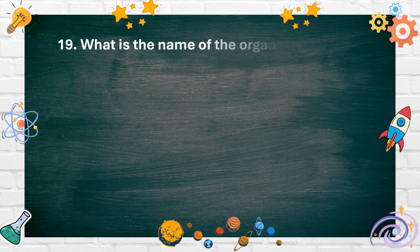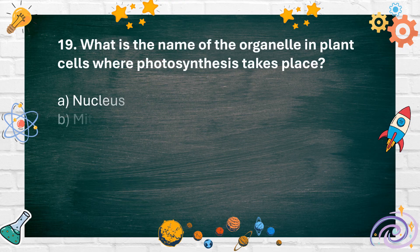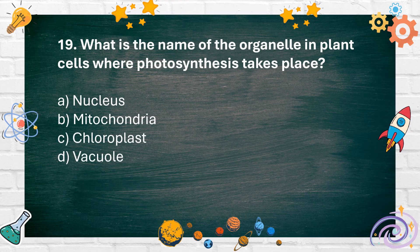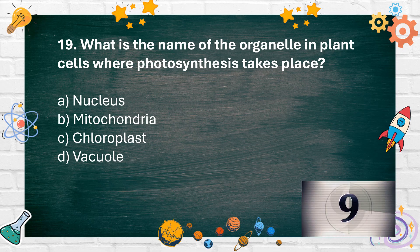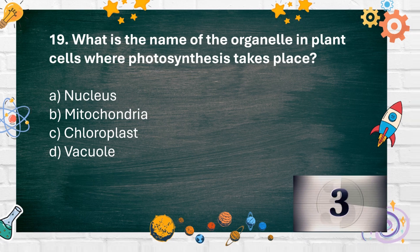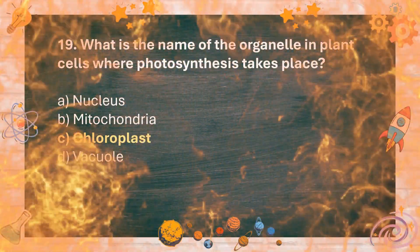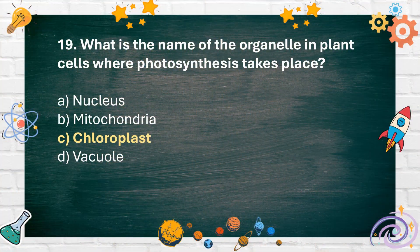Number 19. What is the name of the organelle in plant cells where photosynthesis takes place? A. Nucleus, B. Mitochondria, C. Chloroplast, D. Vacuole. The answer is C. Chloroplast.